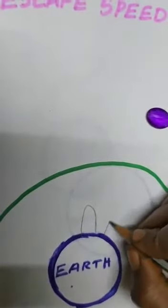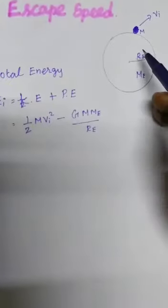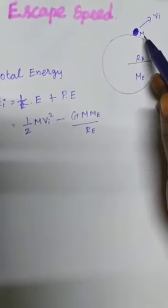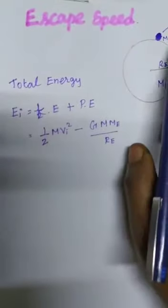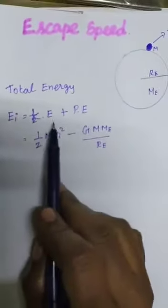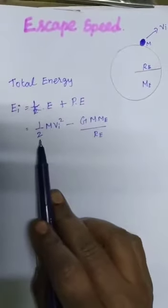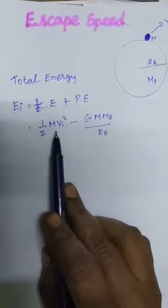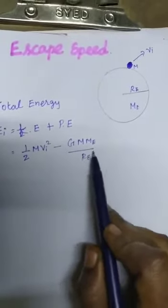So the minimum speed required by the object is called escape speed. Now we consider an object of mass M on the Earth surface when it is thrown up with the initial speed V_I. Now we calculate the total energy of the object. Total energy is equal to kinetic energy plus potential energy. Kinetic energy formula is 1/2 M V_I squared. The potential energy of the mass M is minus G M M_E divided by R_E.